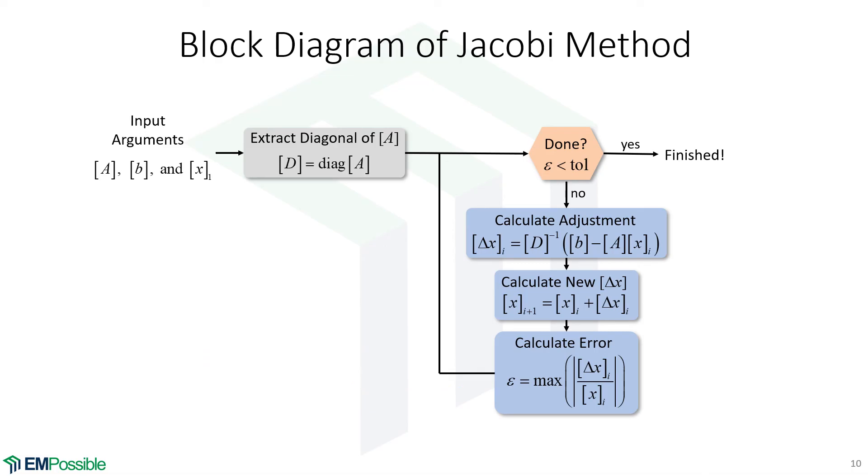So here's the algorithm of the Jacobi method. So we start with, of course, A and B. That's the matrix problem we're trying to solve and a good guess. And if we don't have a good guess, maybe we just put random numbers in here or whatever. But hopefully we have a good guess. Step one, we will pull the diagonal out of A and just call that D.